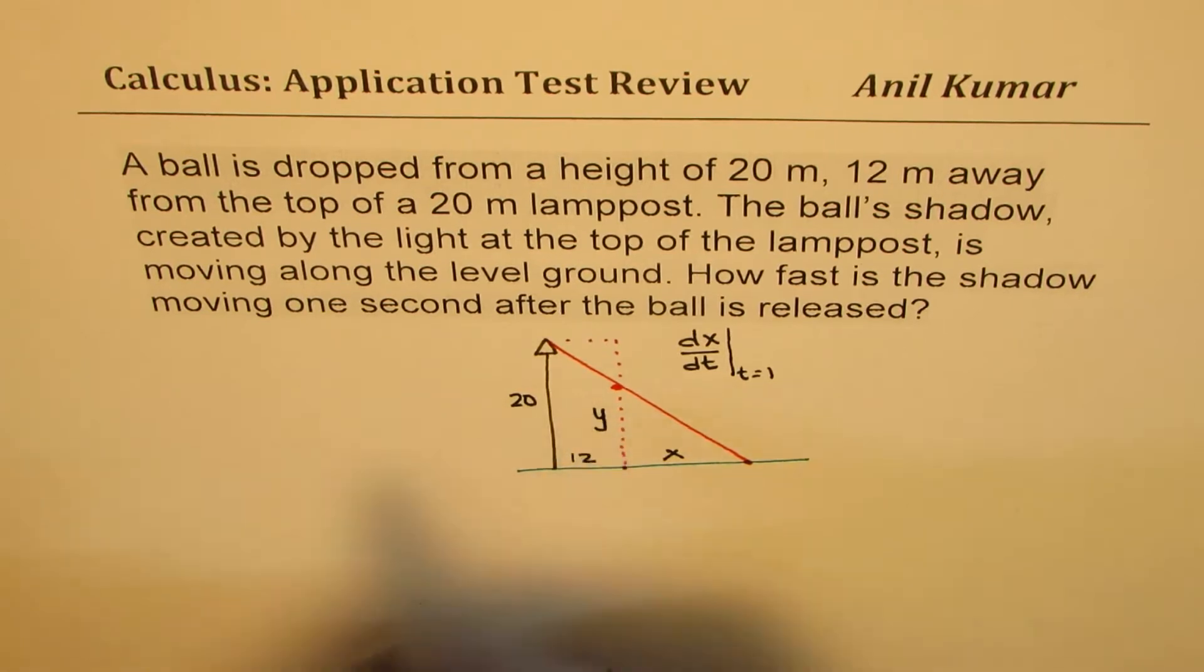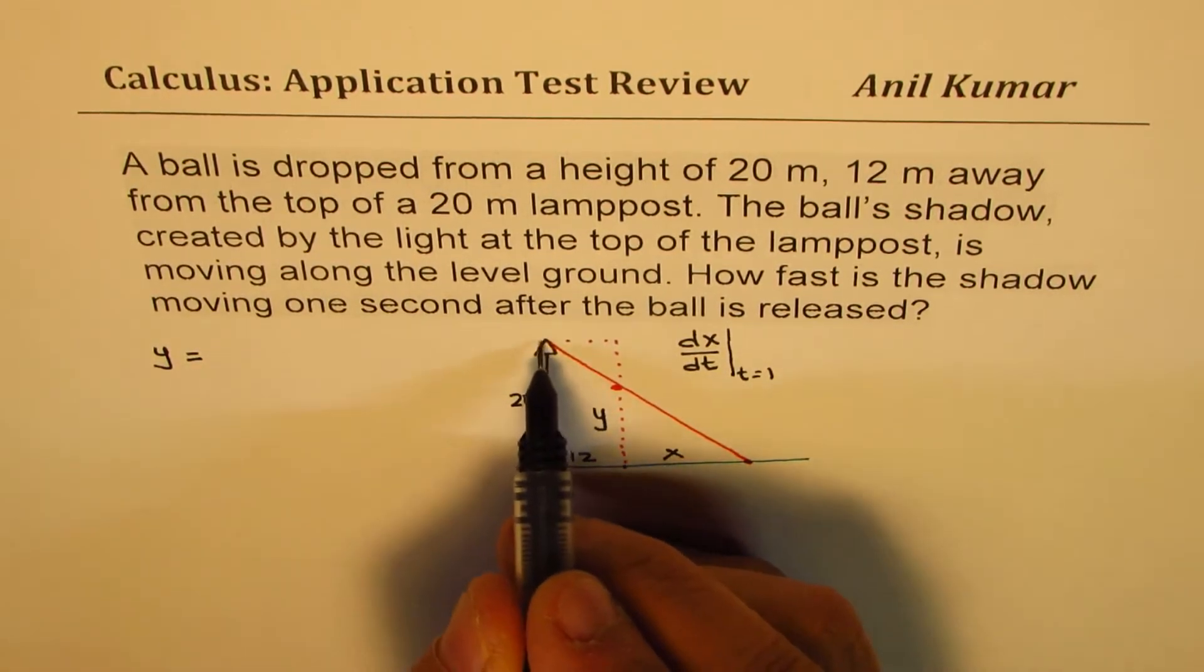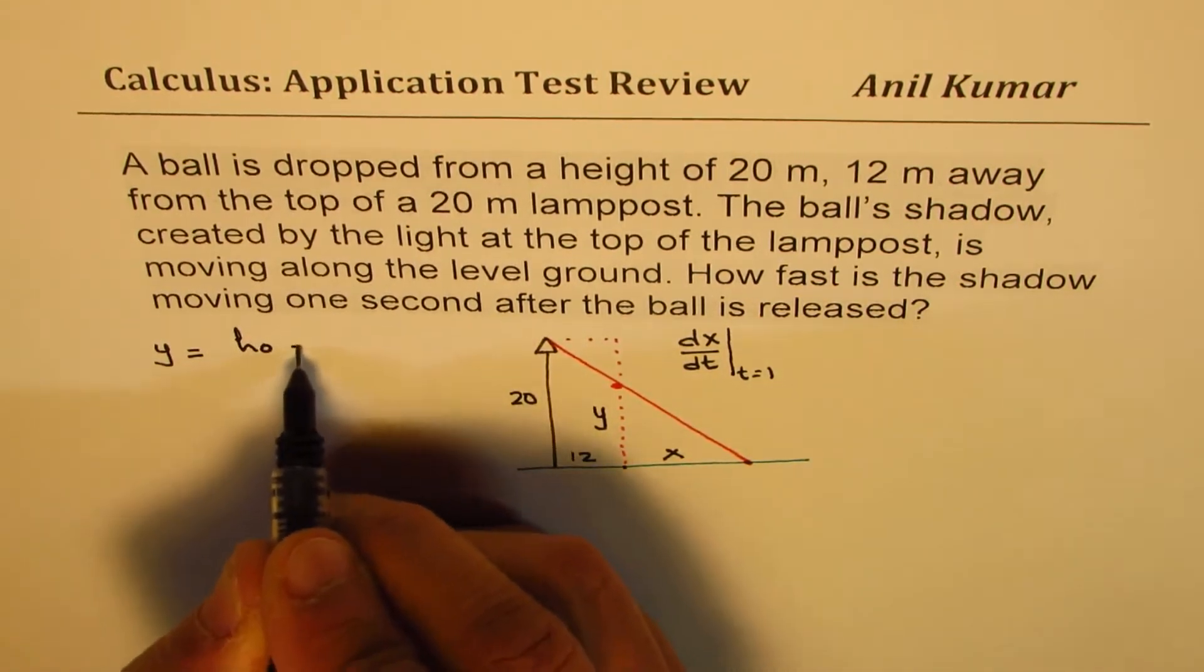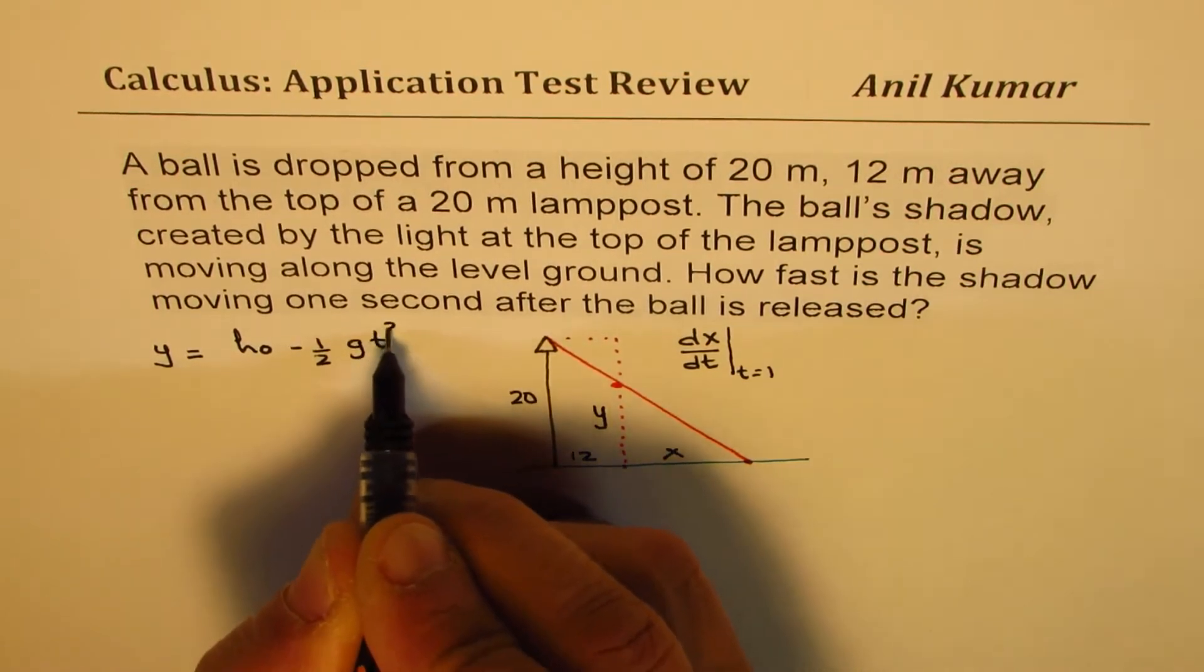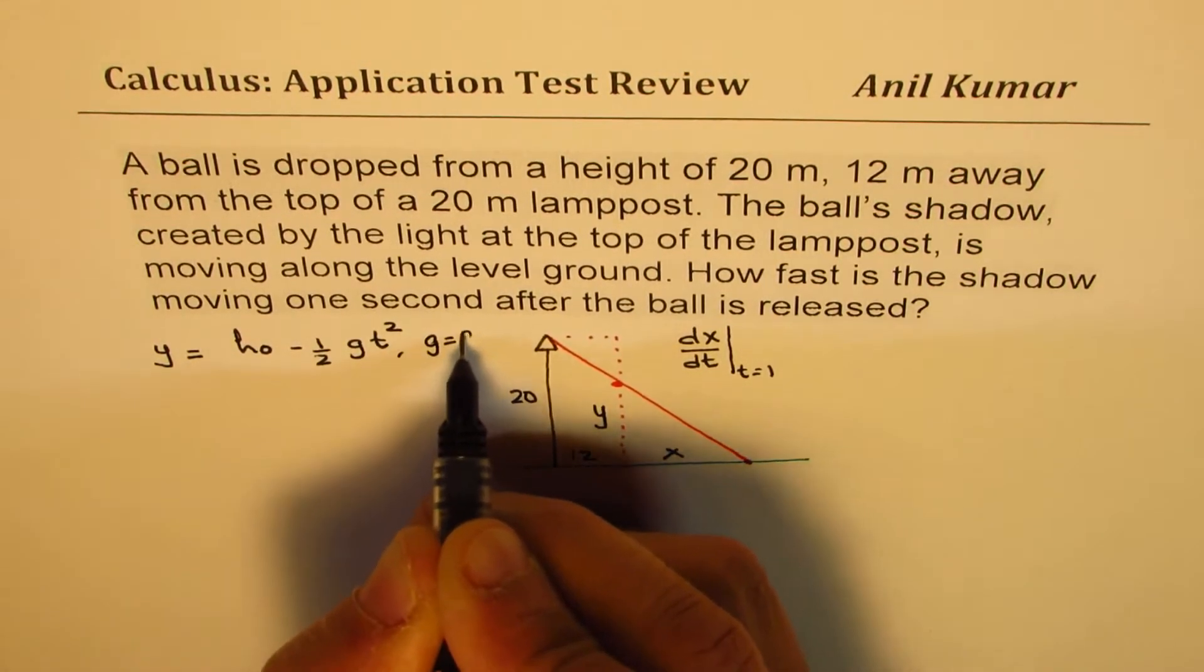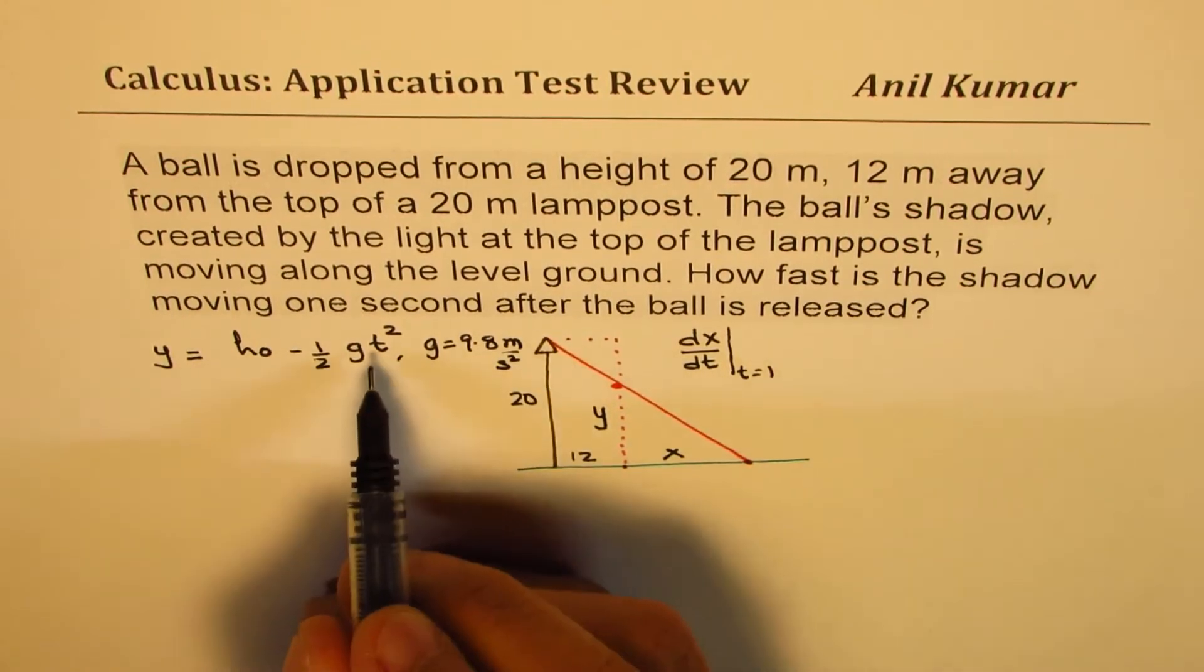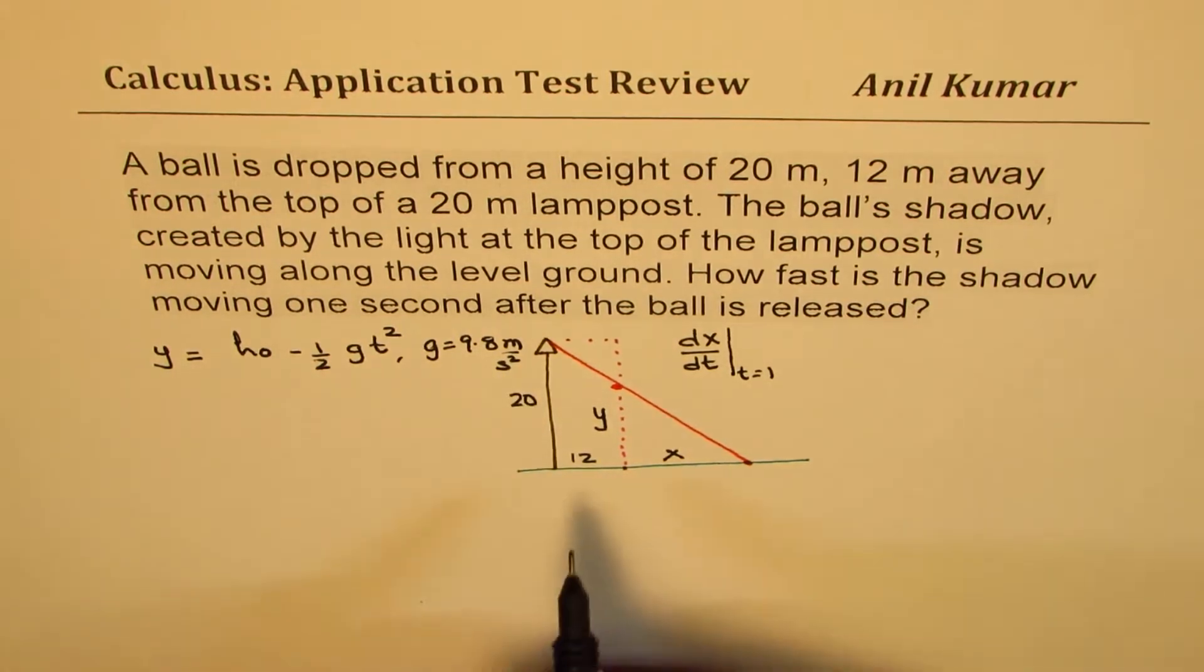In that case, y is given to us as initial height h0 minus half of gt squared, correct? Where g equals 9.8 meters per second squared. t is also seconds. They cancel. We get units in meters. That is what we want.